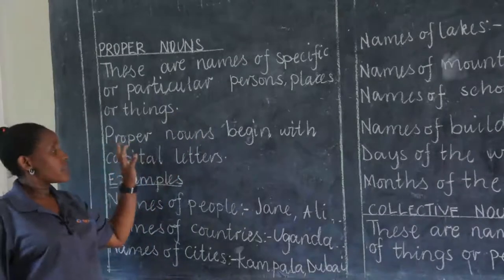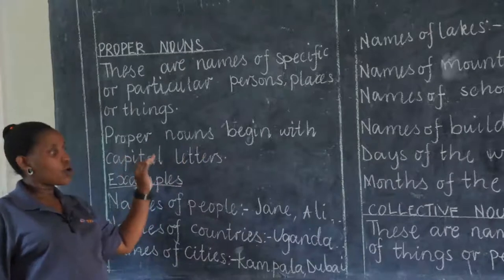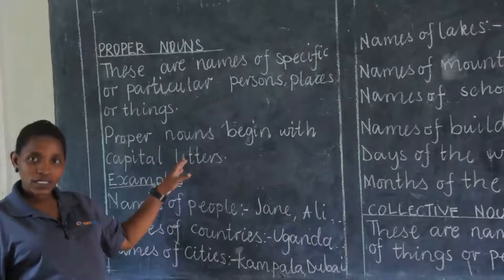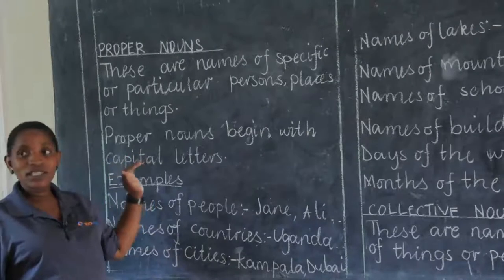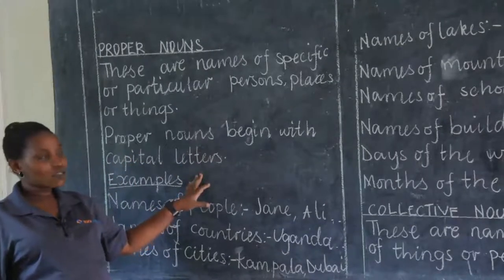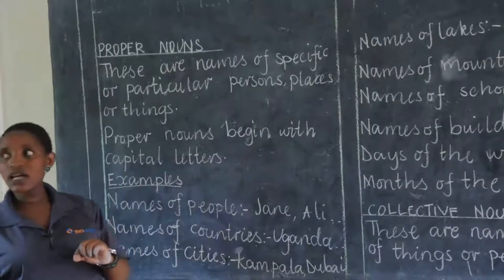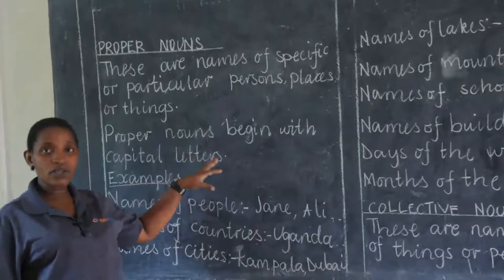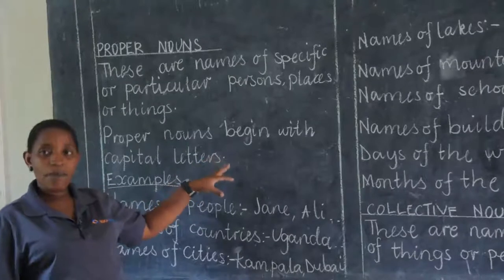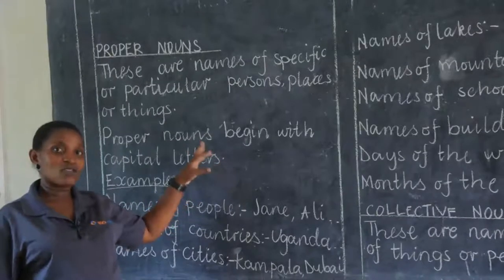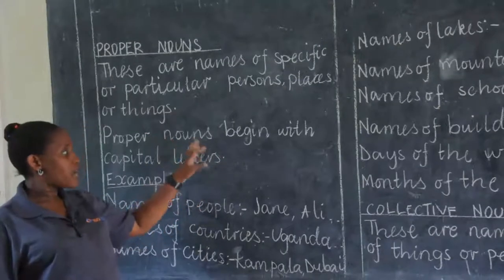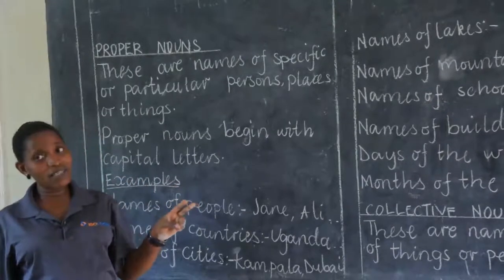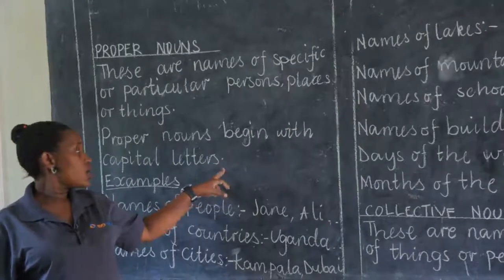Proper nouns begin with capital letters. This is a command — it is a law. When you break it, you are penalized. Whether at the beginning of the sentence or in the middle of the sentence, proper nouns must begin with capital letters. When you are answering a question and you write a proper noun with a small letter, that is a penalty.